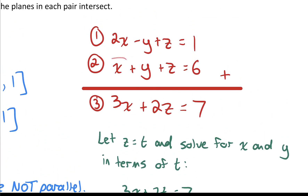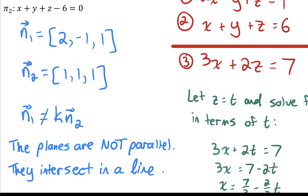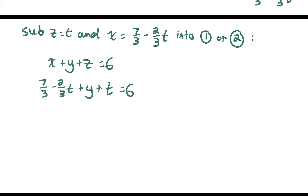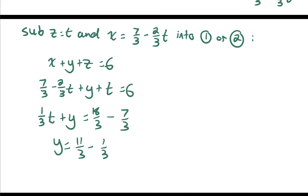I'll substitute into equation two: x + y + z = 6. Replace x with 7/3 - (2/3)t, and z with t. Combining like terms: -2/3 t + t = 1/3 t. Then isolating y: y = 6 - 7/3 - (1/3)t. Converting 6 to 18/3 gives y = 11/3 - (1/3)t.